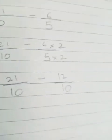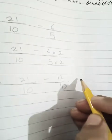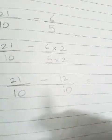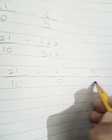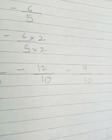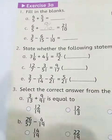Now you can see the denominators same. Just solve which 21 minus 12 is 9 upon 10. This is our answer. Write it.